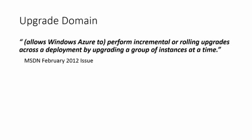Upgrade domain is used to keep your application running during upgrade. Windows Azure will take down your instances one by one and upgrade them in turn, so that at any given moment you have at least one running instance serving user requests. What actually happens is that Windows Azure takes down and upgrades instances by upgrade domains. This process is sometimes called an upgrade domain walk. By default, your instances are distributed into five upgrade domains, but you can change the setting to up to 20 upgrade domains.